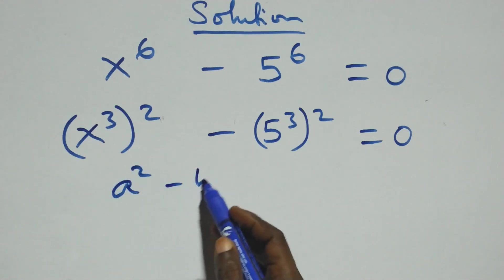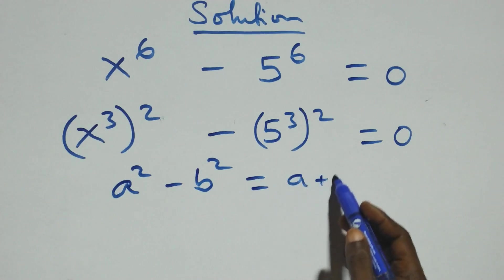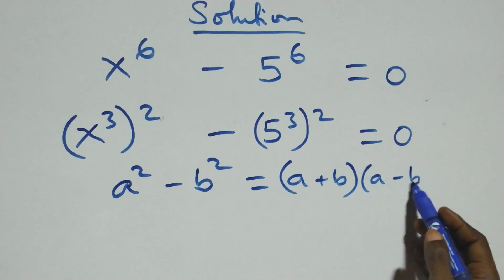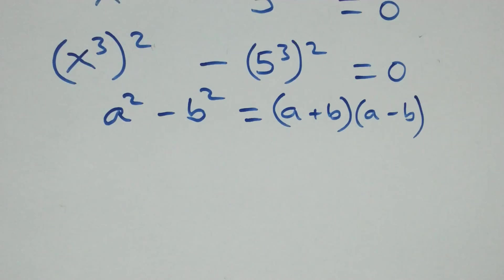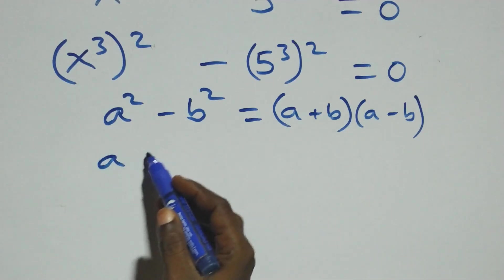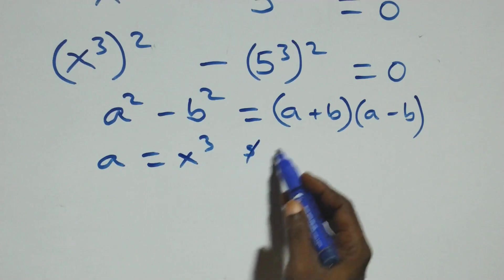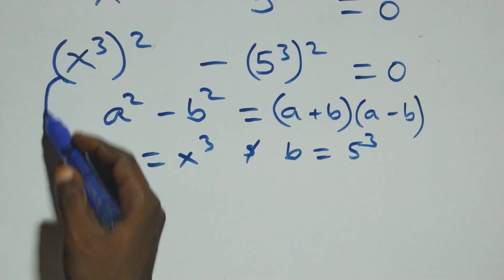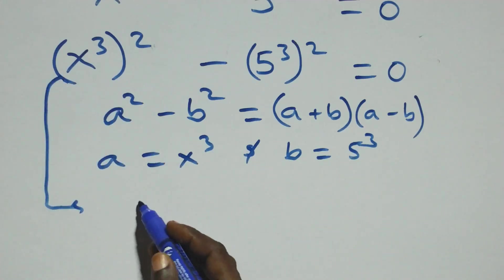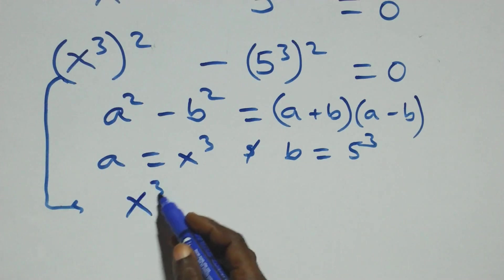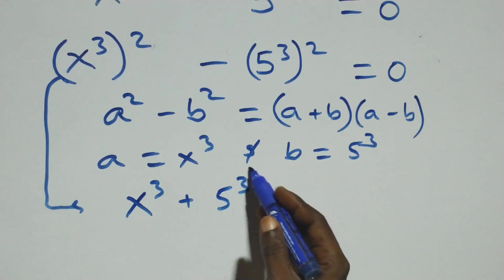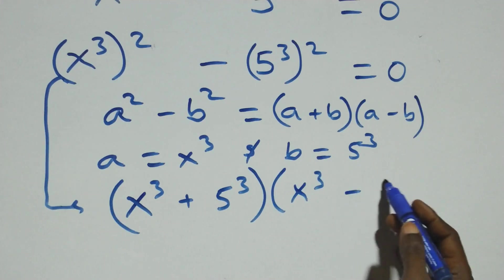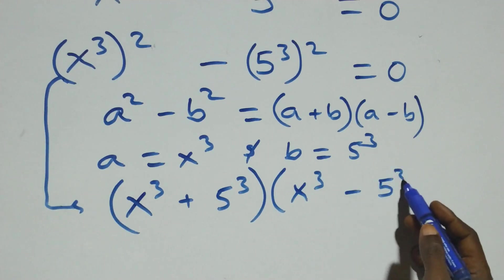Then raised to power 2, equals to zero. This follows from the difference of two squares: a squared minus b squared equals (a plus b)(a minus b), where a stands as x raised to power 3 and b stands as 5 raised to power 3. So this becomes (x³ + 5³)(x³ - 5³) equals zero.